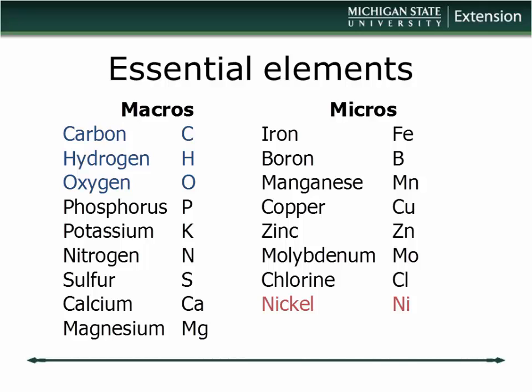Starting with some pretty basic stuff — there are, depending on who's counting, 17 elements that are essential for all plants. Nickel is kind of the newcomer to the list; when I was in college we learned there were 16, so it's evolving. The macronutrients are called that because of the amounts needed — not because they're large molecules — and micronutrients are elements needed in relatively small amounts, like iron, boron, manganese, copper, and zinc.